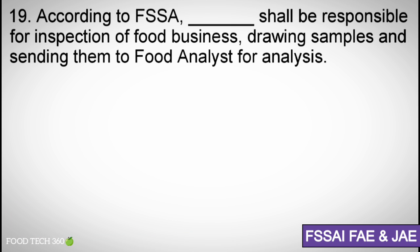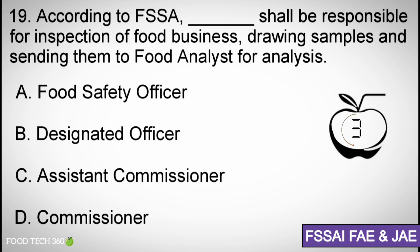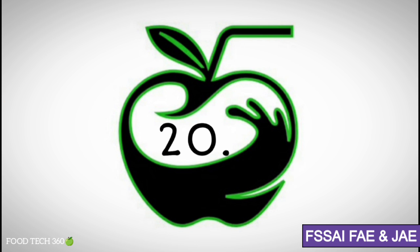Question number nineteen: According to FSSAI, who shall be responsible for inspection of food businesses, drawing samples, and sending them to the food analyst for analysis? Options: A) Food Safety Officer, B) Designated Officer, C) Assistant Commissioner, D) Commissioner. Correct answer: A) Food Safety Officer.